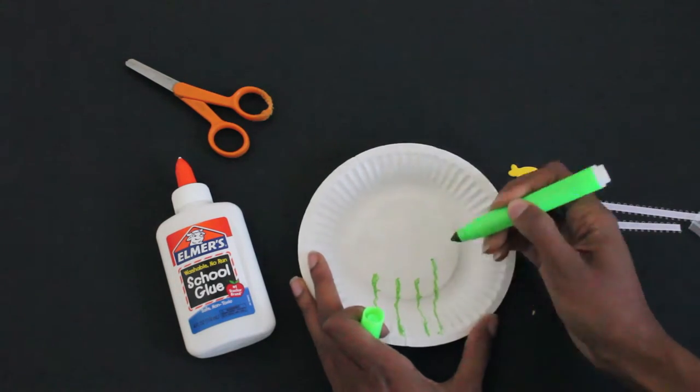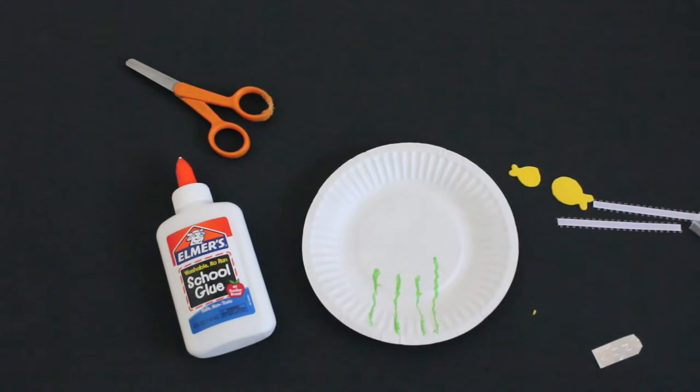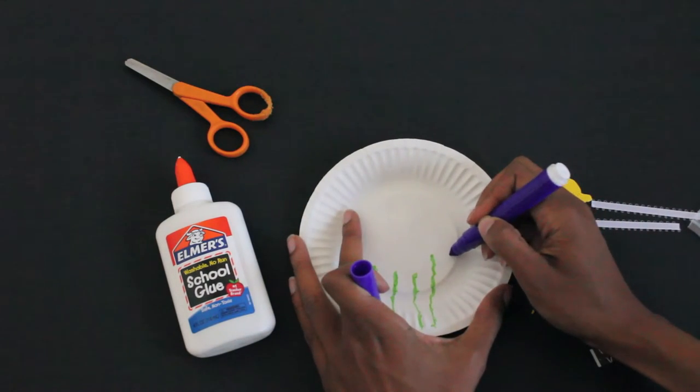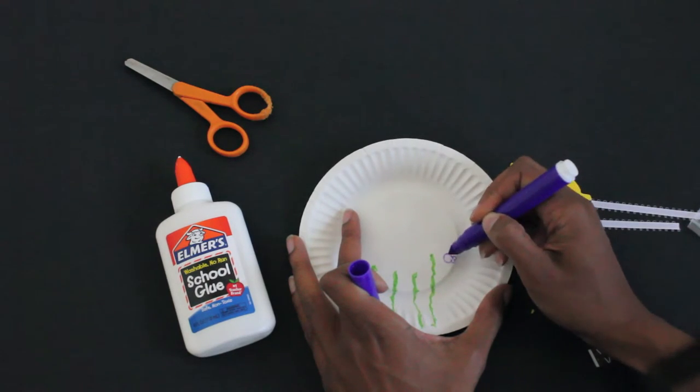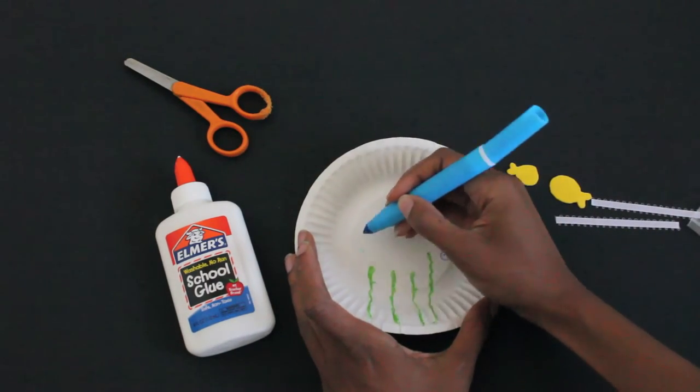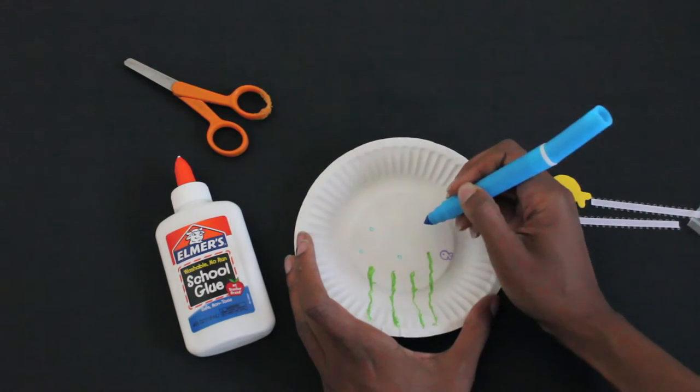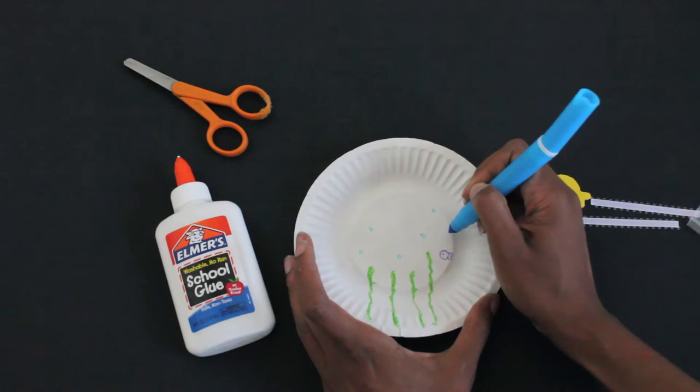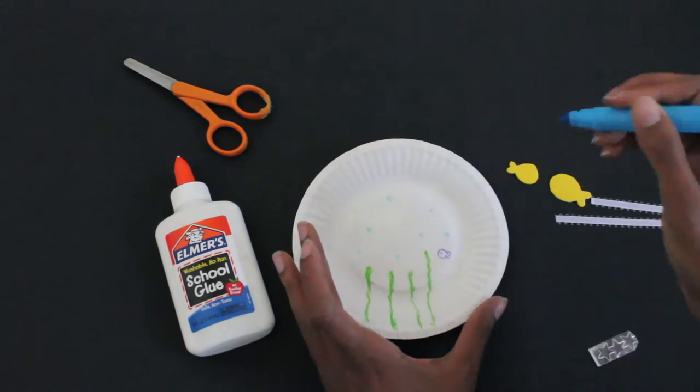You don't have to make seaweed though. You can draw fish. Maybe I'll draw a little purple fish in the background. He's just a little baby fish. Here we go. You could draw fish, dolphins, or mermaids. You can draw water. Let's make some water bubbles. I'm going to make water bubbles.